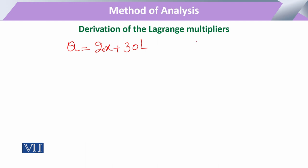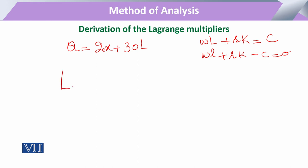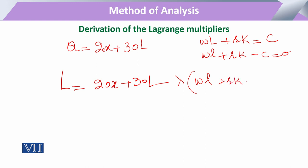Production function है: Q = 20K + 30L. इसका constraint यह है कि wage rate multiply by labor plus capital का rate, और वो हमारे budget line या cost के equal होनी चाहिए। जब इसको zero के equal set करेंगे तो: WL + RK − C = 0. Lagrange form में यह बनेगा: L = 20K + 30L − λ(WL + RK − C).